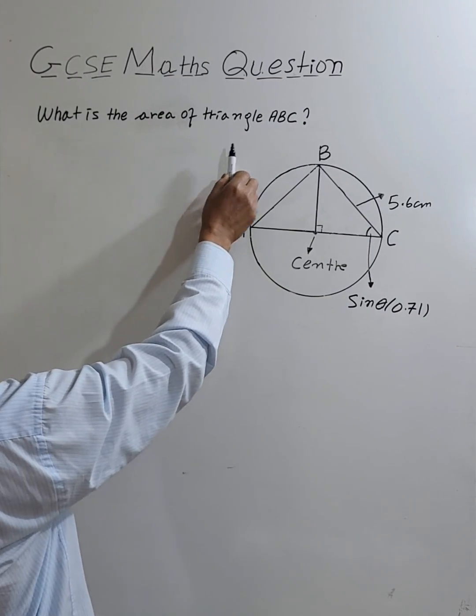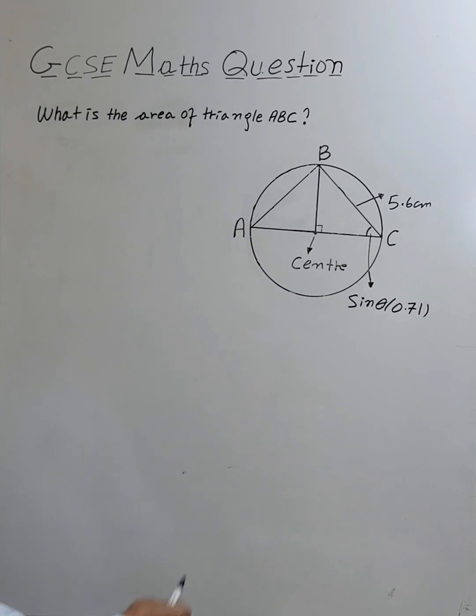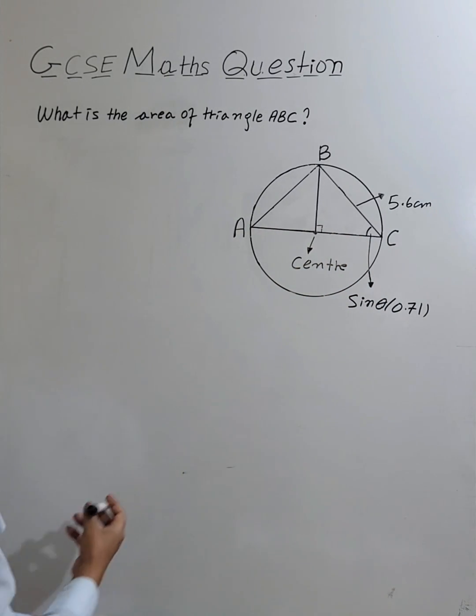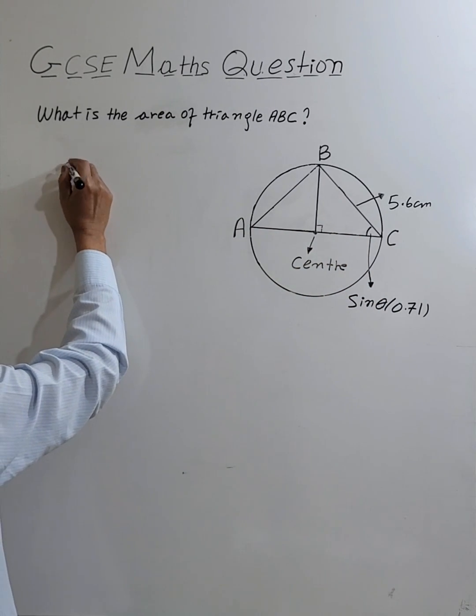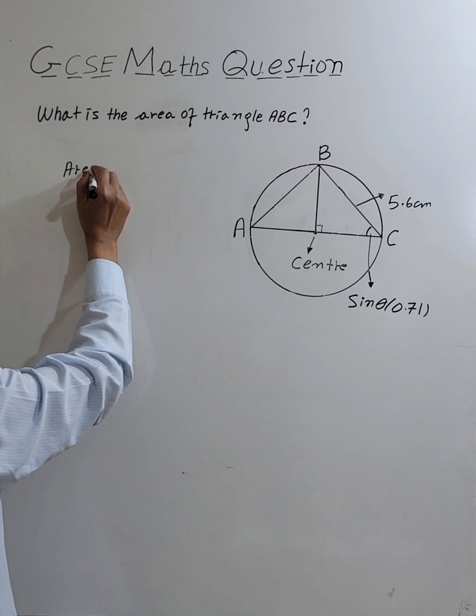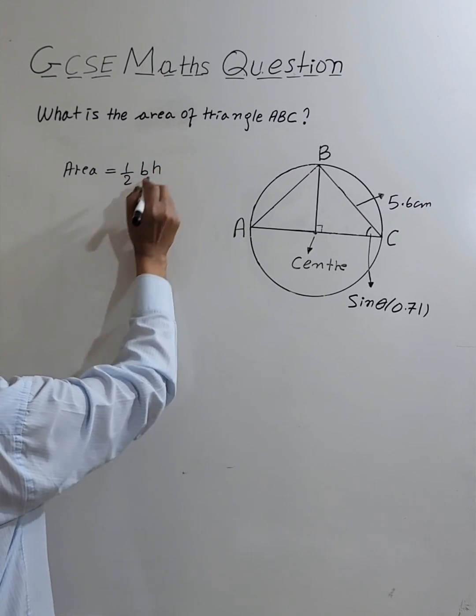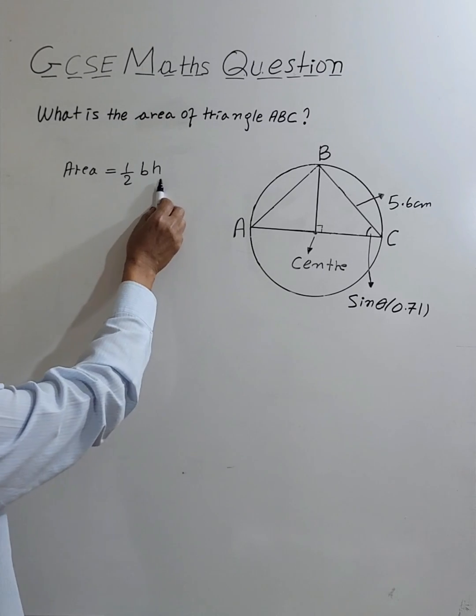What's the area of triangle ABC? The area of a triangle equals half base times height, and none of them is given.